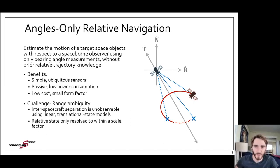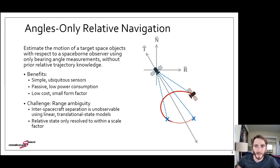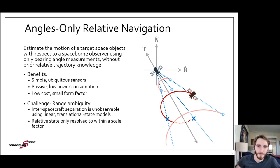As a concrete example application, I'll consider the problem of angles-only relative navigation — estimating the motion of a target space object with respect to a space-borne observer using only bearing angles obtained from a single camera. This is extremely attractive because it utilizes camera sensors already ubiquitous in satellite applications and doesn't rely on cooperation from the target, which could be a spacecraft operated by another agency or an uncontrolled rocket body or orbital debris. The main challenge is a range ambiguity arising when using linear translational state dynamics models, which predict the same bearing angle behavior regardless of range to the target.